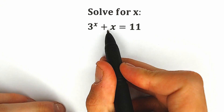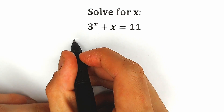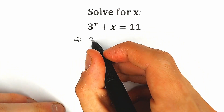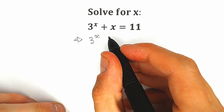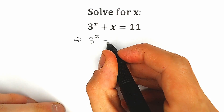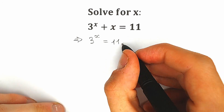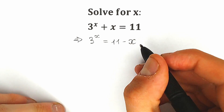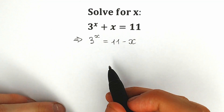So first of all, let's subtract x from both sides. As a result, we have 3 to the x on the left side, and on the right side we have 11 minus x. So right now we have subtracted x from both sides.